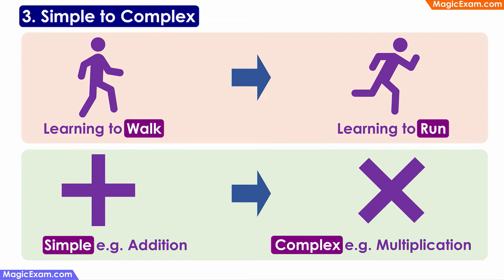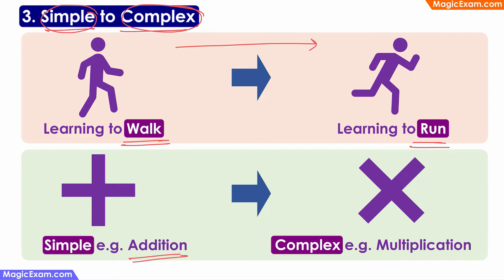The next principle is simple to complex. This is common sense because a person has to learn simple things first and only then progress towards more complex activities. In physical development, a baby will first learn to walk, and only then move towards a more complex activity such as running. Even in cognitive development, a person will learn a relatively simple process like addition first, and only then move towards a more complex process like multiplication. So any type of development starts with simple processes first and then moves towards more complex aspects. This is the simple to complex principle of development.